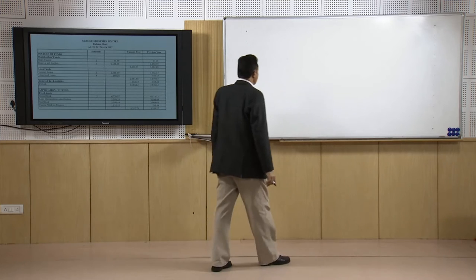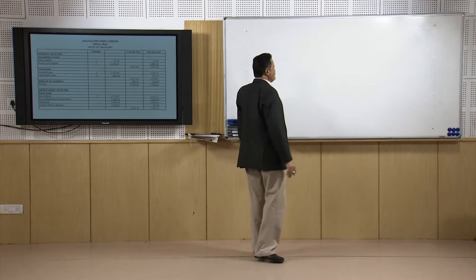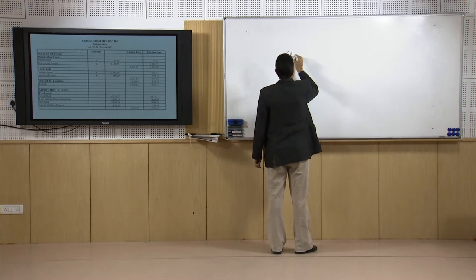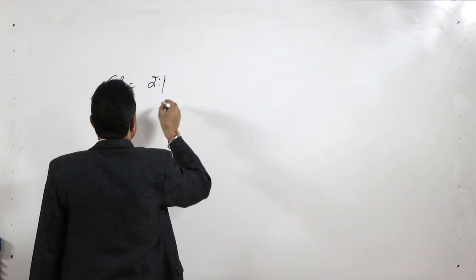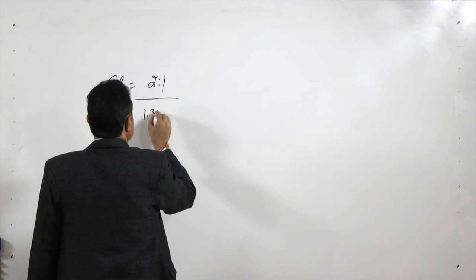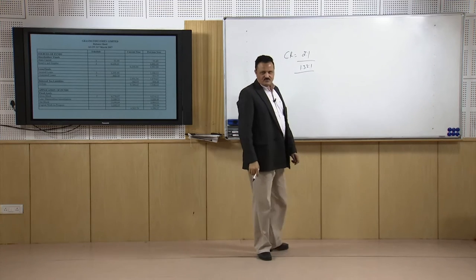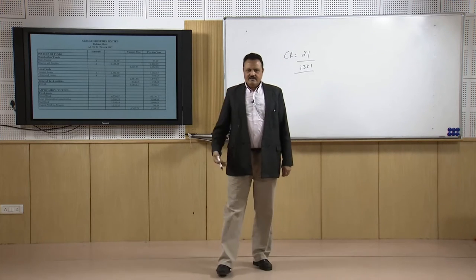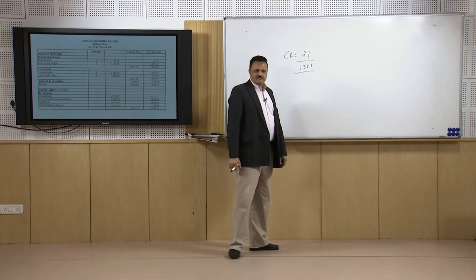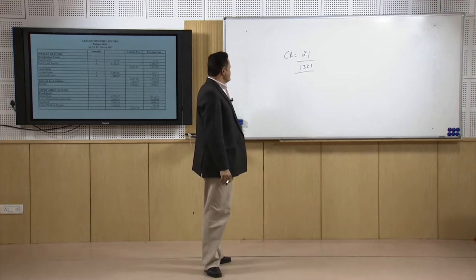Why is the rule of thumb 1.33 is to 1? Earlier, the rule of thumb was 2 is to 1. Now it has been revised downward to 1.33 is to 1. I will discuss the background of why this ratio was lowered — the acceptable ratio is now 1.33 is to 1, whereas earlier it was 2 is to 1.